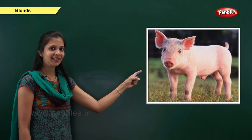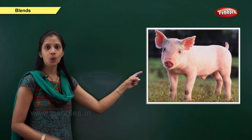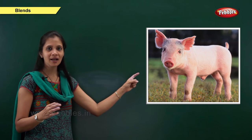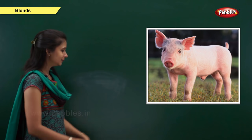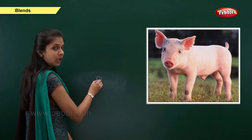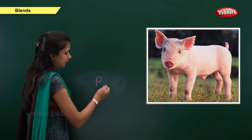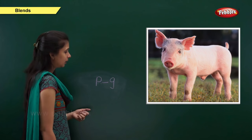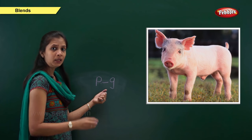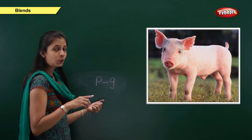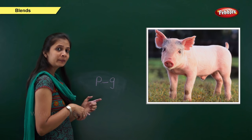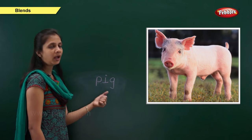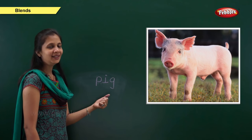Next one. Which animal is this? Yes, it is pig. What is the sound of this word? It is pa, e, ga. Pa is the beginning sound, so the letter is p. Ga is the ending sound, so the letter is g. What about the middle sound? It is 'e'. The vowel is i. So: pa, e, ga — pig. P, i, g — pig.